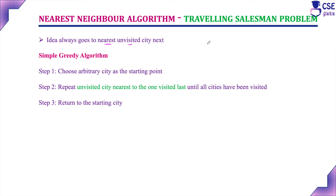What is the traveling salesman problem? Among the given cities, the salesman has to start from one city considered as the starting city. From that city, he has to visit all other cities exactly only once, and finally he has to return back to the starting city. The constraint is the cost of traveling or visiting the cities should be minimum. In the nearest neighbor algorithm, the idea is to always go to the nearest unvisited city next.